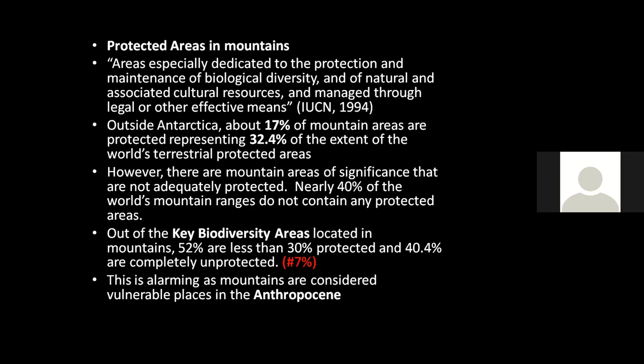A protected area is a clearly defined geographical space especially dedicated to the protection and maintenance of biological diversity as well as cultural resources. We have around 17% of mountain areas as protected areas, representing around 32% of terrestrial protected areas. However, nearly 40% of the world's mountain ranges are not under protected cover, and out of the key biodiversity areas located in mountains, 40–50% are not protected at all.